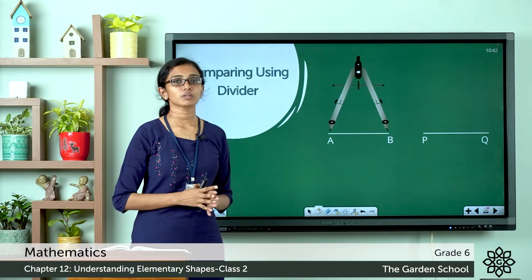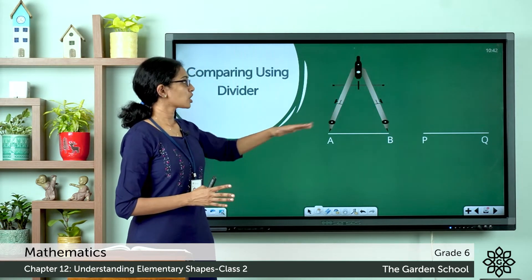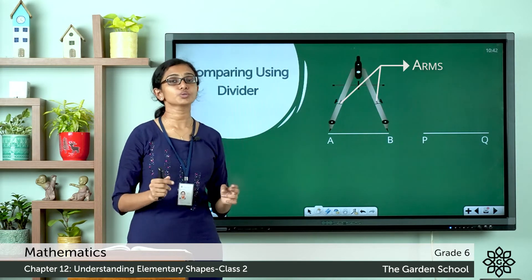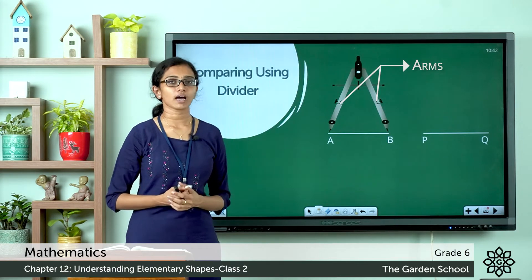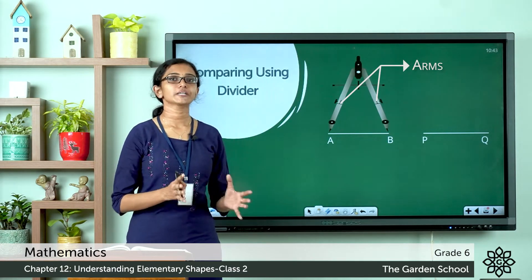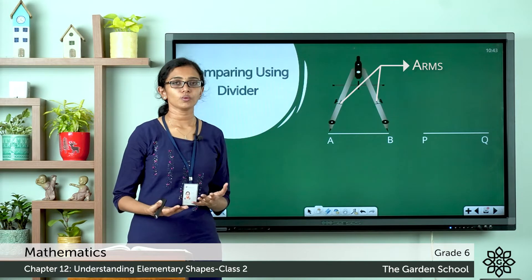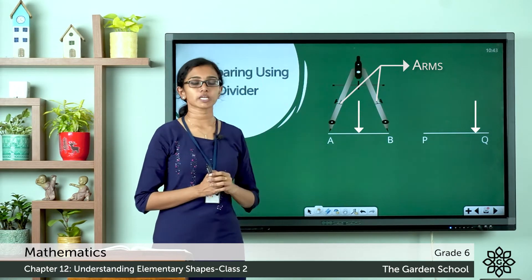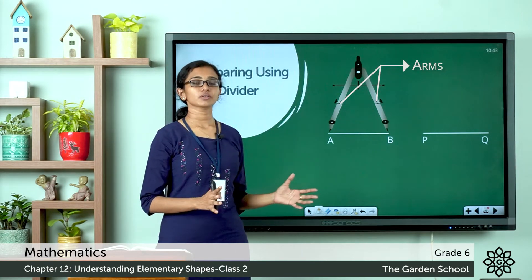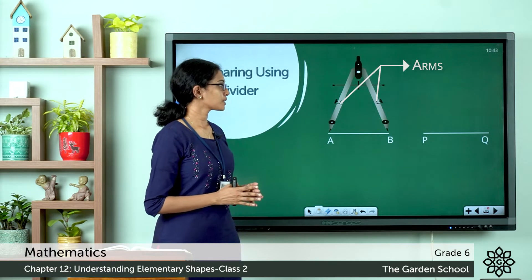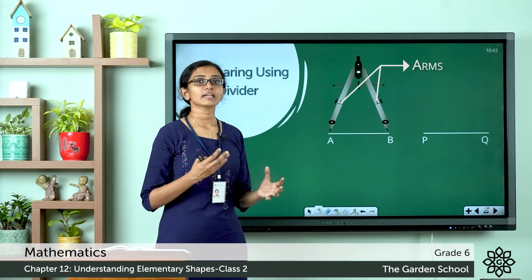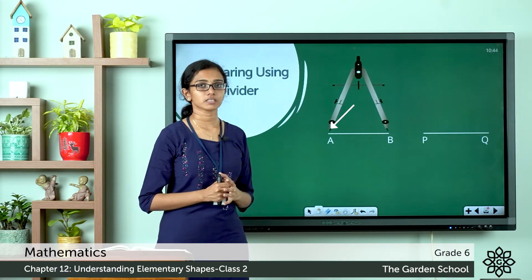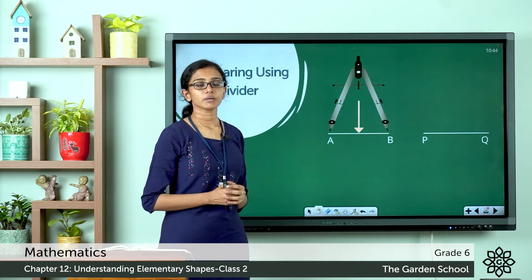Now let's look at comparing line segments using a divider. You can find this geometrical instrument in your geometry box — it is called the divider, and it has two pointed arms. To show an example, I have drawn two line segments: line segment AB and line segment PQ. The first step is to open the arms of the divider and place the point of one arm on one end point of line segment AB.